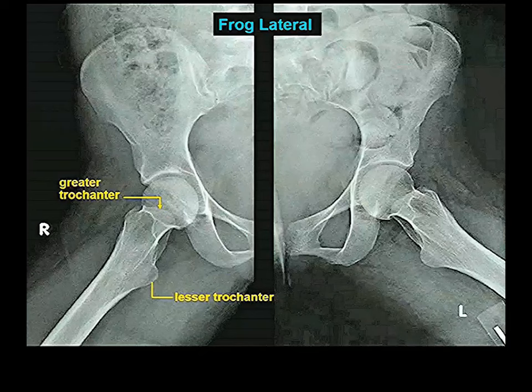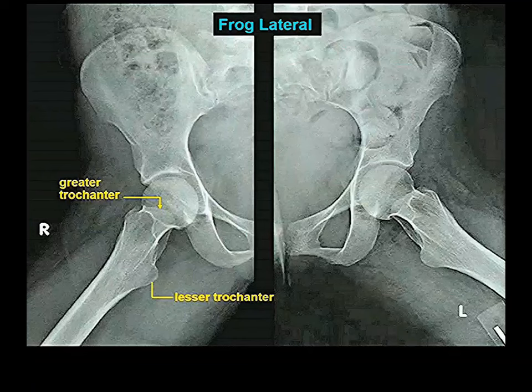Frog lateral X-rays are particularly good at showing a condition known as a slipped femoral capital epiphysis, and for various kinds of diseases of the hip joint. They often do a frog lateral in addition to a standard AP hip joint film.